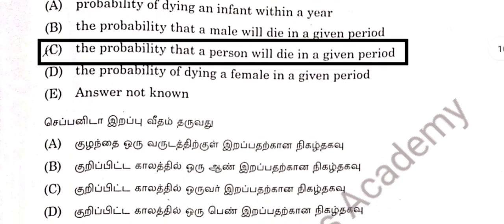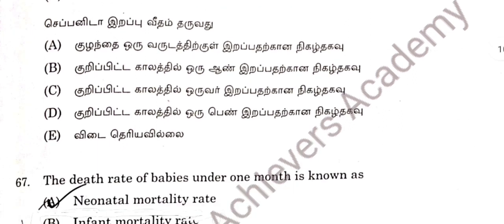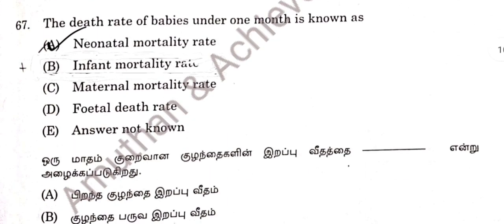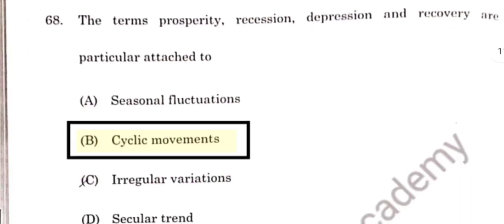Question 66: Option C. Crude death rate provides the probability that a person will die in a given period. 66 option B is correct answer. The death rate of babies under one month is known as Neonatal Mortality Rate. Option A. Question 67 noted.